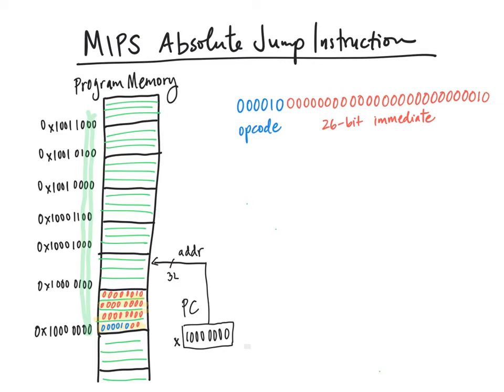This means that our PC always ends in 0, 0. And so if we're trying to construct a 32-bit PC value, we can always begin by just making the two least significant bits 0.